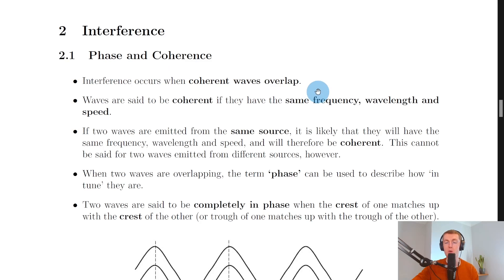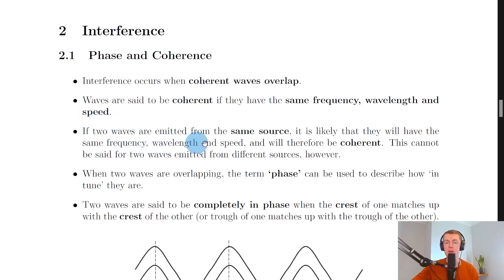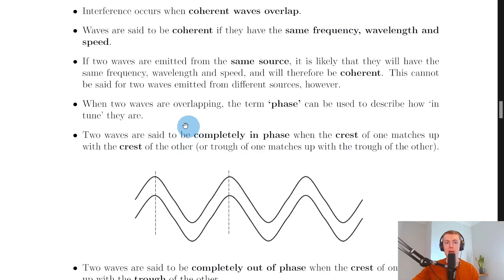So what do we mean by coherent waves? Waves are said to be coherent if they have the same frequency, wavelength, and speed. If two waves are emitted from the same source, it is likely they will have the same frequency, wavelength, and speed and will therefore be coherent. This cannot be said for two waves emitted from different sources.